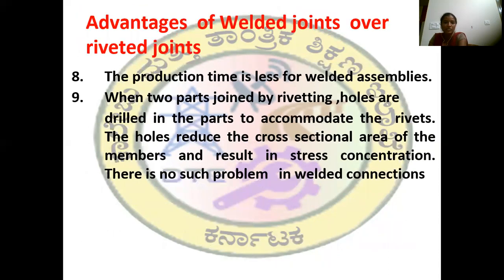This is all about the advantages. Additionally, the production time is less when compared to riveted assemblies. When two parts are joined by riveting, holes must be made in the parts to accommodate the rivets. These holes reduce the cross-sectional area of the members and result in stress concentration. There will be no such problem in welded connections.